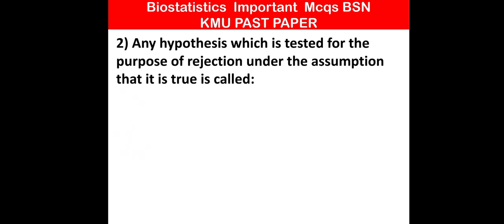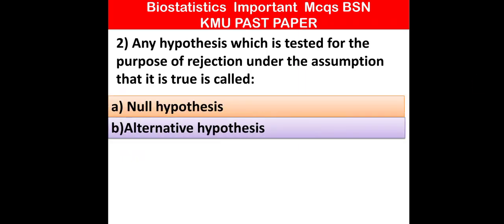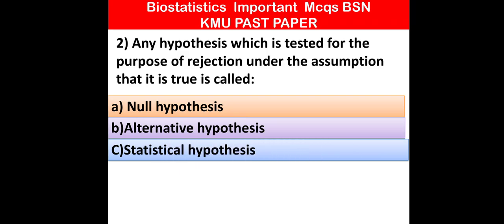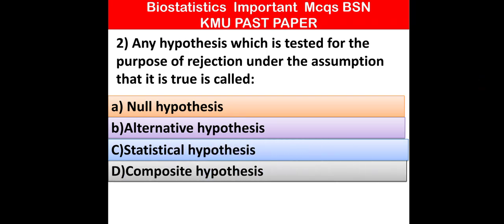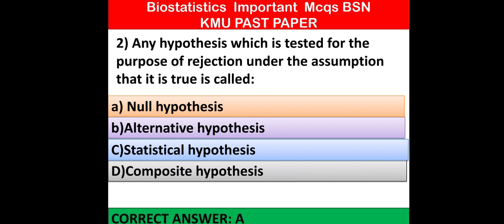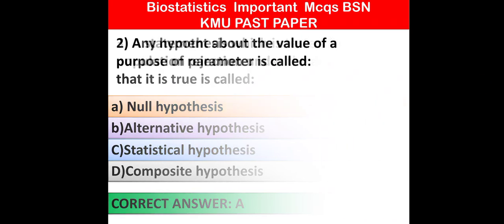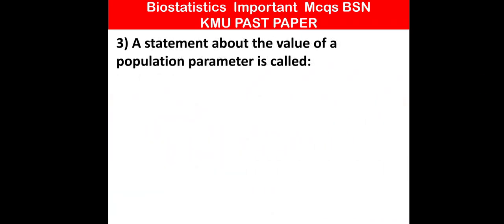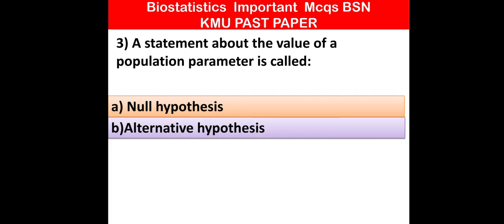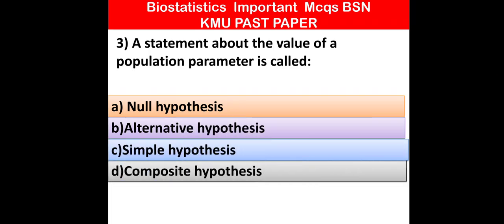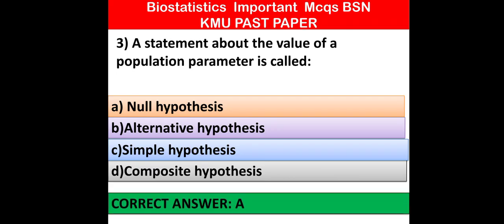MCQ number 2: Any hypothesis which is tested for the purpose of rejection under the assumption that it is true is called — null hypothesis, alternative hypothesis, statistical hypothesis, or composite hypothesis. Option A is correct: null hypothesis. MCQ number 3: A statement about the value of a population parameter is called — null hypothesis, alternative hypothesis, sample hypothesis, or composite hypothesis. Option A is correct.